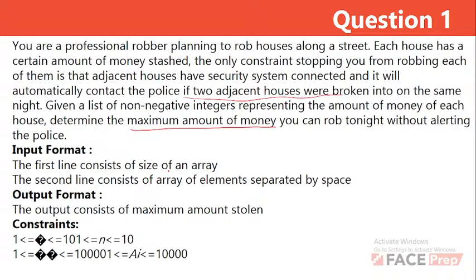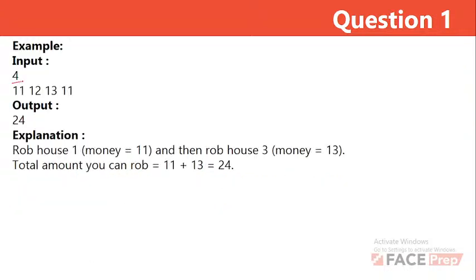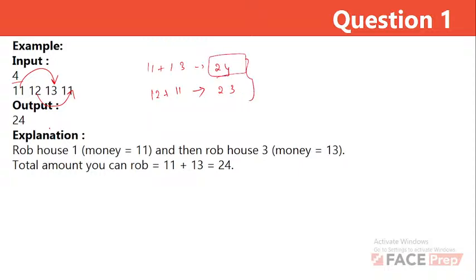The first line of input is the size, and the second line contains the array elements. In the output, we print the maximum amount stolen. For example, with 4 elements — 11, 12, 13, 11 — we can either pick 11 and 13 (sum = 24) or 12 and 11 (sum = 23). The maximum is 24, so we print 24.